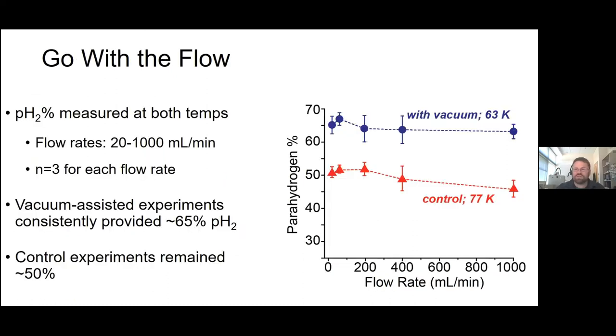We did this at both temperatures, both with the vacuum at 63 Kelvin and also without vacuum at 77 Kelvin. The control is the red line, the colder one is the blue line above it. We did this at different flow rates, from 20 milliliters per minute up to 1000 milliliters per minute. We did each data point three times, so we have an average and standard deviation to report. Under our regular liquid nitrogen temperatures, we get around 50 to 52% parahydrogen. It drops off a little bit as we increase flow rate, but not by very much. When we use the vacuum pump to cool the liquid nitrogen, we can generate higher fractions of parahydrogen upwards of around 65%, and that stayed fairly constant throughout the different flow rates as well.